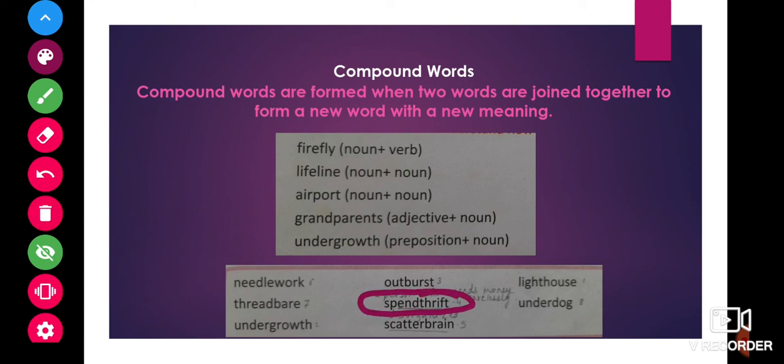Then we have spendthrift. Spendthrift means a person who spends money carelessly. Spendthrift is also made from two words spend and thrift and together it is a compound word. Underdog is also made up of two words under and dog. Underdog means a person who is an underachiever.